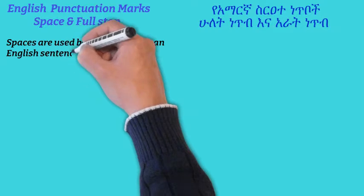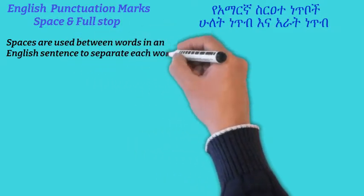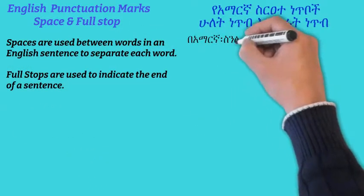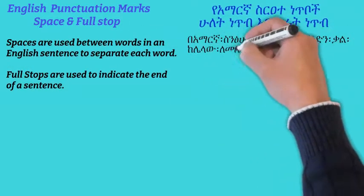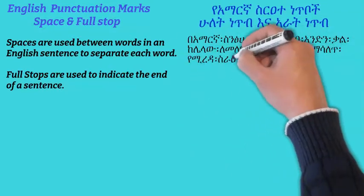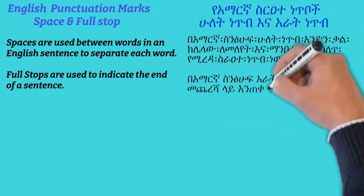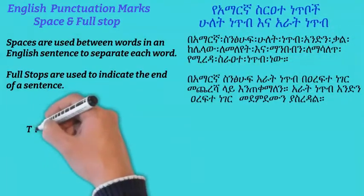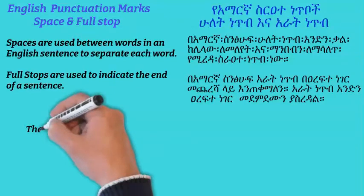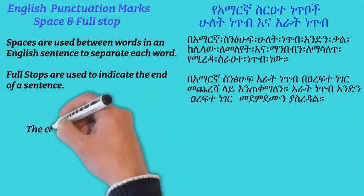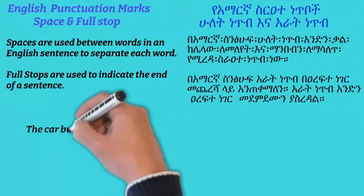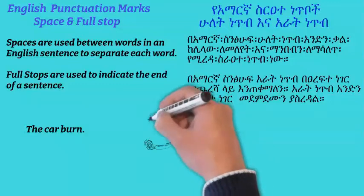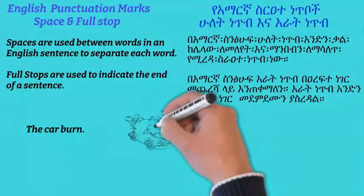English punctuation marks: space and full stop. Spaces are used between words in an English sentence to separate each word. Full stops are used to indicate the end of a sentence.